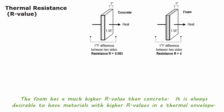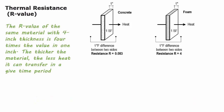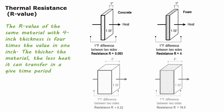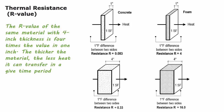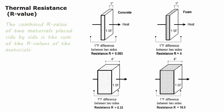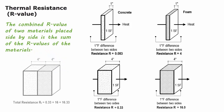It is always desirable to have materials with higher R-values in a thermal envelope. The R-value of the same material with 4-inch thickness is 4 times the value at 1 inch — the thicker the material, the less heat it can transfer in a given time. The combined R-value of two materials placed side by side is the sum of the R-values of the materials.